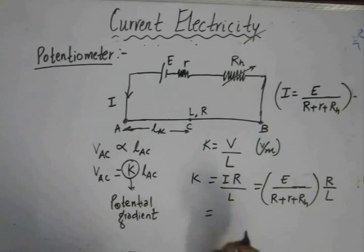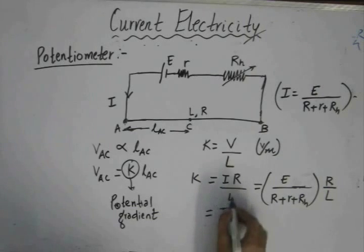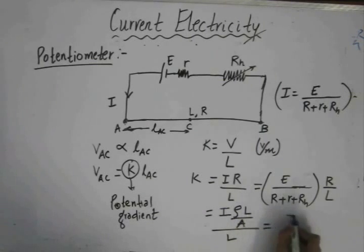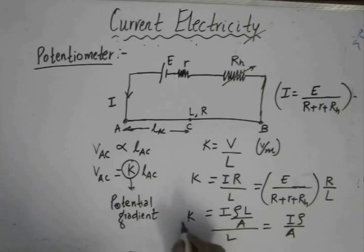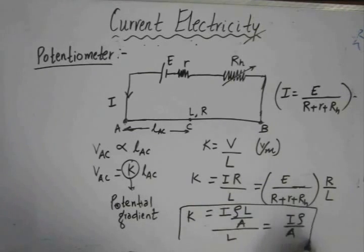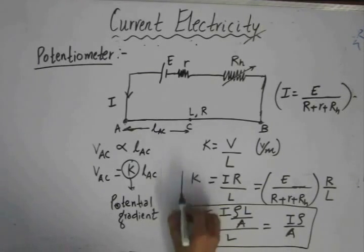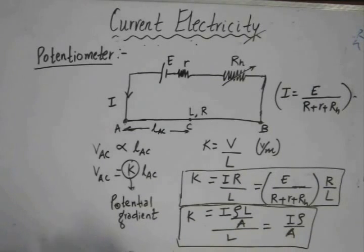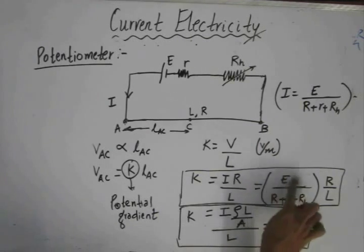We could also write it in terms of specific resistivity. The resistance R could be written as ρL divided by A, and dividing by L simplifies to i·ρ divided by A. So this expression can also be used to determine the value of the potential gradient.